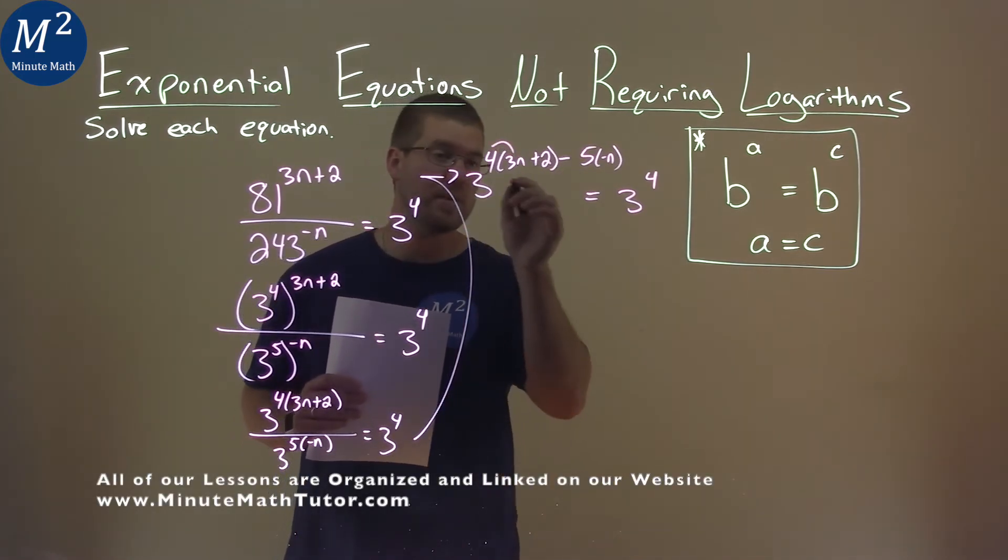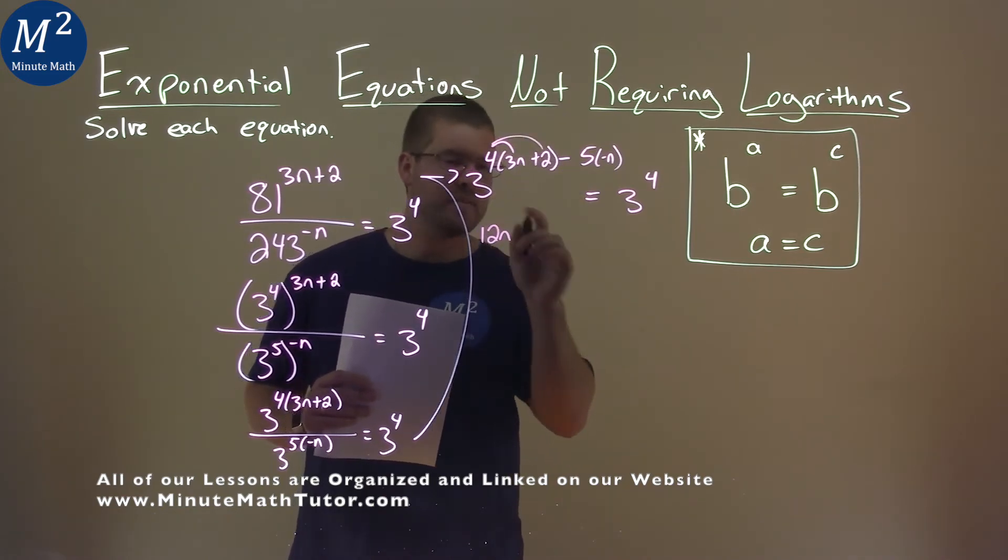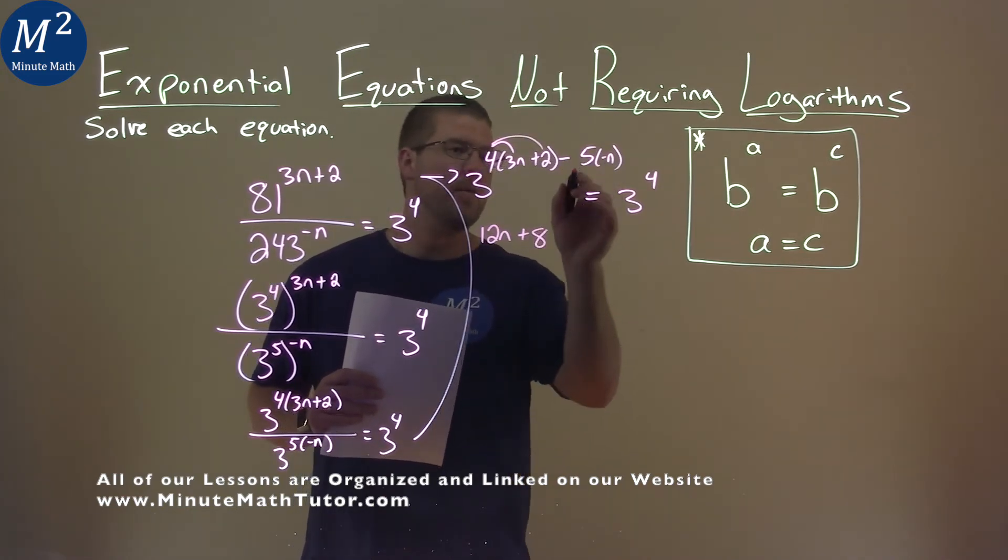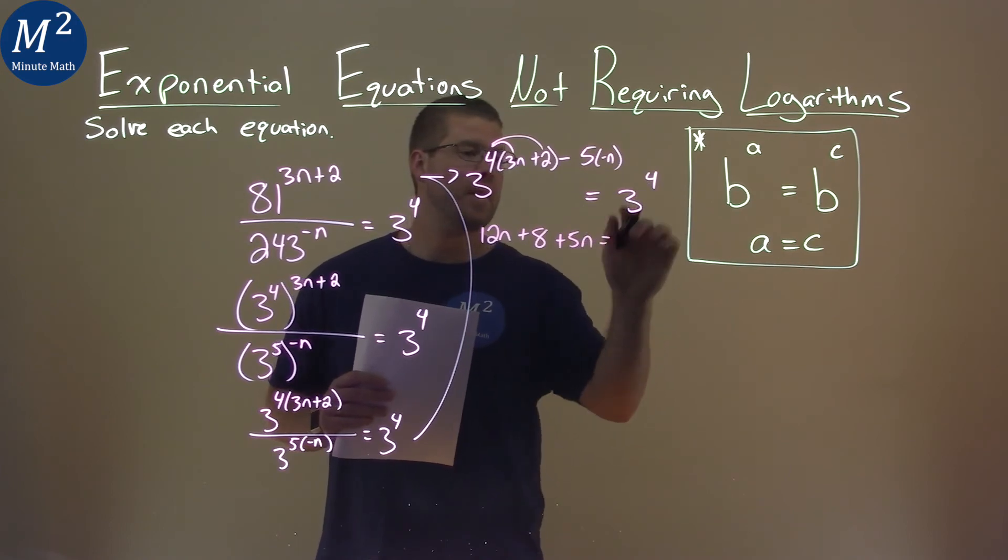4 times 3n is 12n, and 4 times 2 is 8. And we have, well, 5 times a negative n is negative 5n, but the double negative makes it positive. Plus 5n, and now that's equal to just that 4 being the exponent.